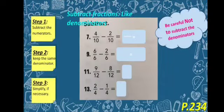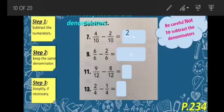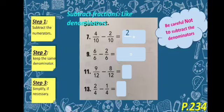Our next question is subtract. Remember, we don't subtract the denominators — we only subtract the numerators. Number 7: 4 over 10 minus 2 over 10. Step 1: subtract the numerators — 4 minus 2 equals 2. Step 2: keep the same denominator, so it will be 10, giving us 2 over 10. Step 3: simplify — 2 and 10 both can be divided by 2: 2 divided by 2 equals 1, and 10 divided by 2 equals 5. So the answer is 1 over 5.